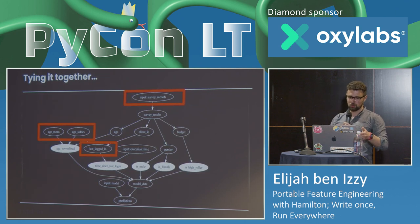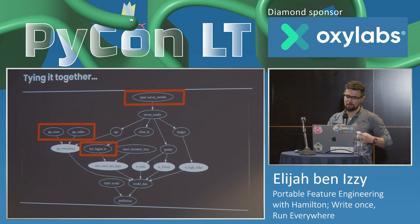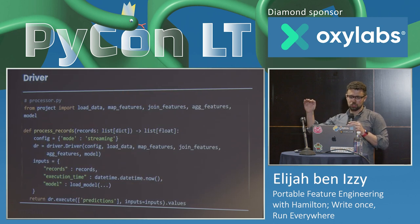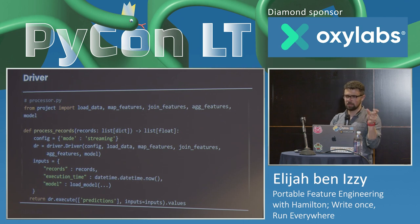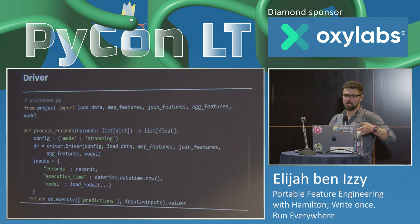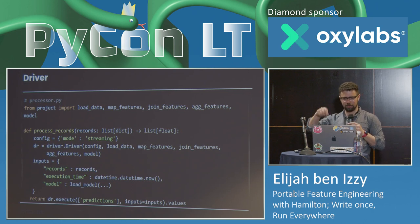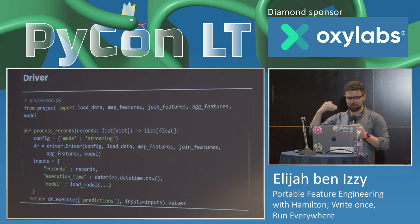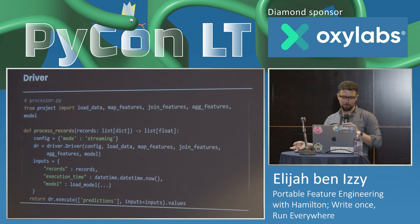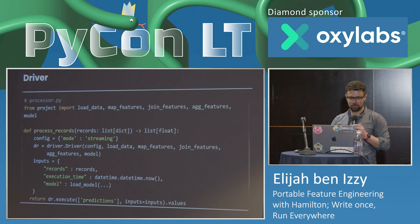The red pieces in the DAG are the ones we've changed — overall it looks pretty much the same. In the driver, imagine this is inside a stream processor that can process pieces in small mini-batches — batches of one, ten, whatever. We have our config telling us which functions to use, we create our driver with all the same modules, pass in inputs — we don't have the database and table stuff because we're not loading data — execute, and return predictions.